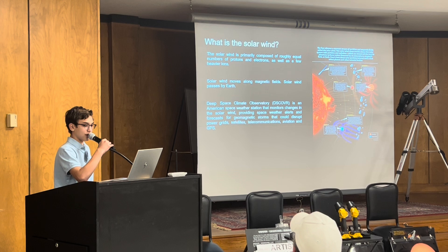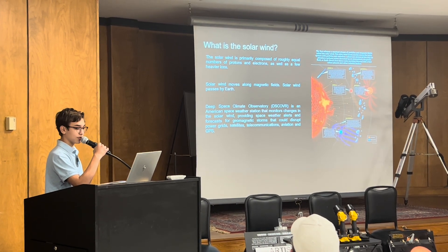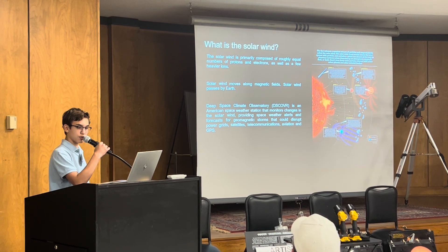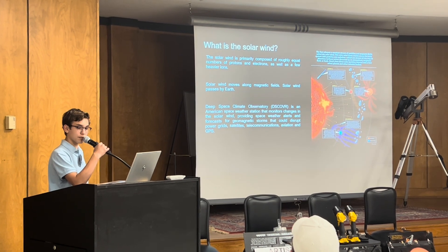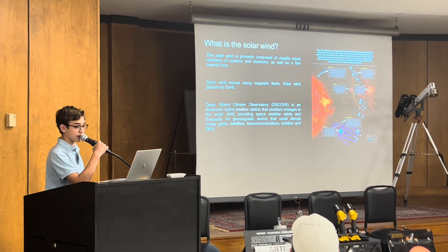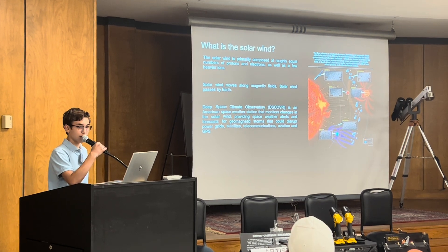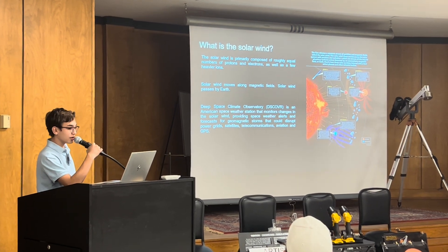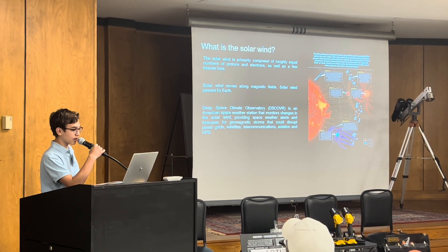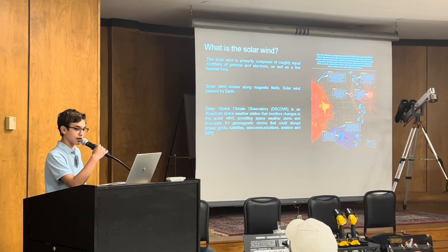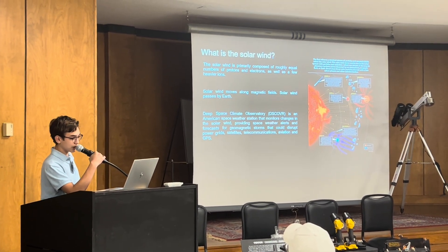Depending on the activity within the sun's outer regions, the density and speed of the solar wind varies from 5 to 100 protons per cubic centimeter, with speeds between 200 and 800 kilometers per second. On a typical average day, the speed of the solar wind is about 400 kilometers per second, and its density is about 10 protons per cubic centimeter.